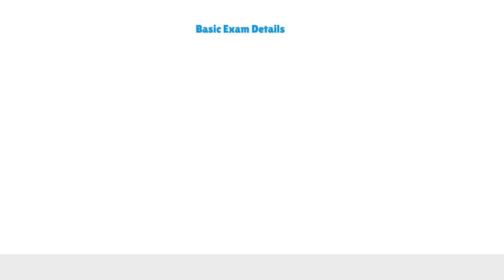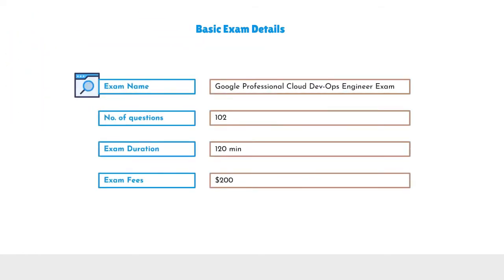Exam details. The Professional Cloud DevOps Engineer exam will comprise around 102 multiple choice and multiple select questions. Candidates will be assessed on the basis of these questions. The exam duration is 4 hours. An application fee of $200, plus tax where applicable, is to be paid to take the exam.